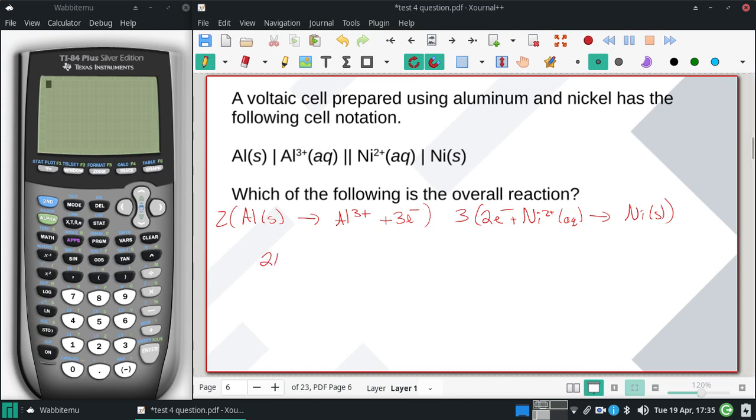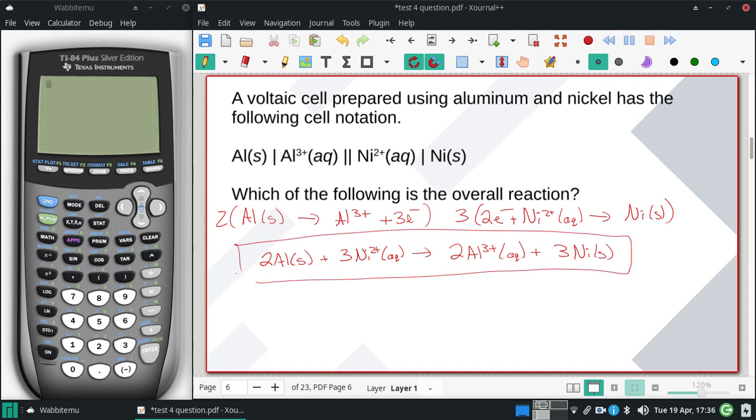So I have an overall process of two aluminums and three nickels to give me two aluminums and three nickel solids. And that would be our overall reaction.